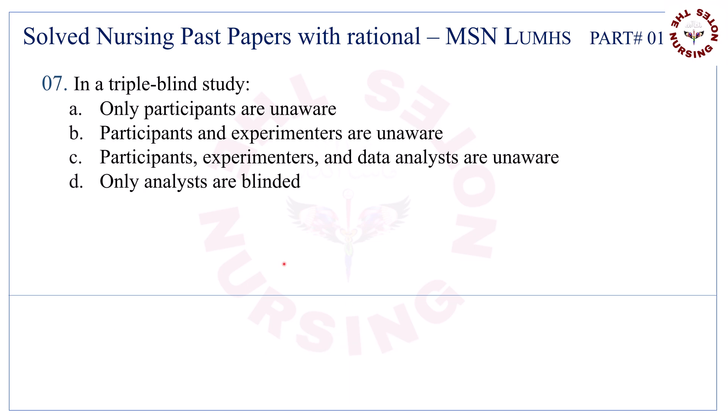Question number seven: in a triple blind study. Correct answer is C — participants, experimenters, and data analysts are unaware.